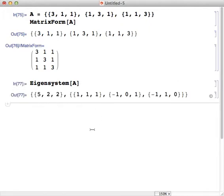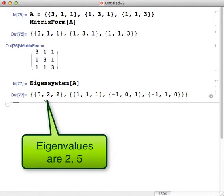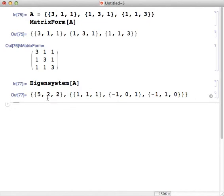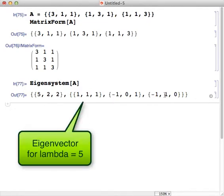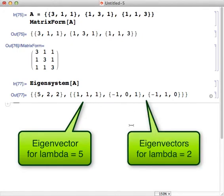So here is the result. Remember the result of the eigensystem command gives us four objects. The first object here is a list that contains the eigenvalues for A. So A has two distinct eigenvalues, 5 and 2. The eigenvalue of 2 has multiplicity 2. And here are the three eigenvectors that go with that: 1, 1, 1; negative 1, 0, 1; negative 1, 1, 0.